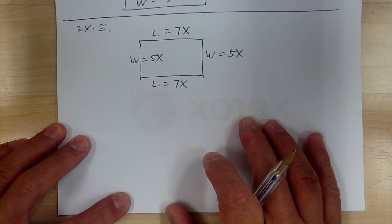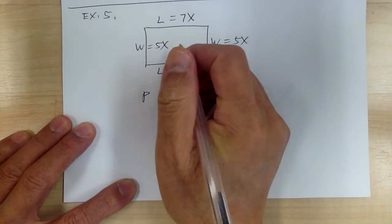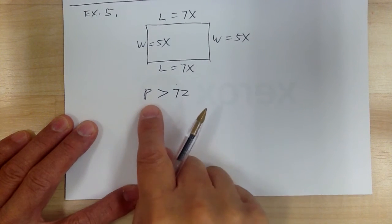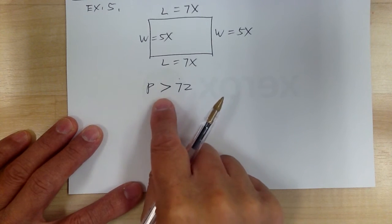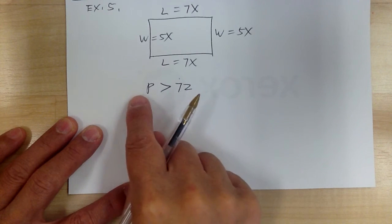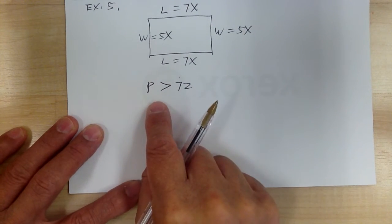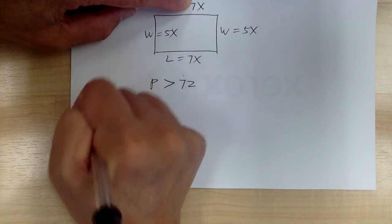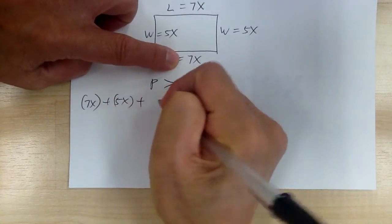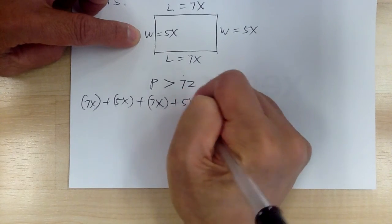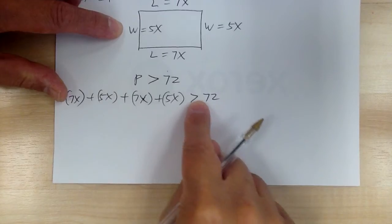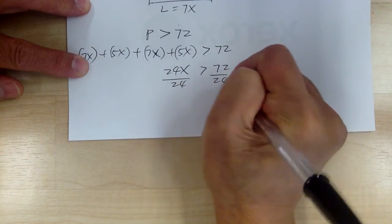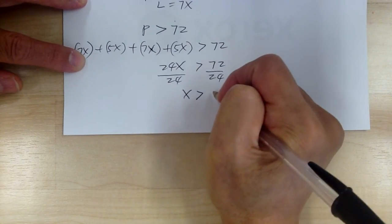The perimeter is greater than 72. Whenever you have an inequality, pay close attention — do not change it into an equal sign; keep the inequality throughout. The perimeter is all four sides: 7x + 5x + 7x + 5x. Adding gives 24x is greater than 72. Divide both sides by 24, so x is greater than 3.